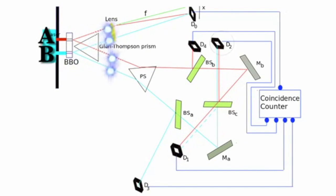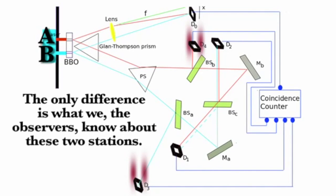If a photon makes it to D one or D two, they always display an interference pattern. Yet every time a photon hits D three or D four, a clump pattern is formed. But the only difference is what we, the observers, know about these two stations.